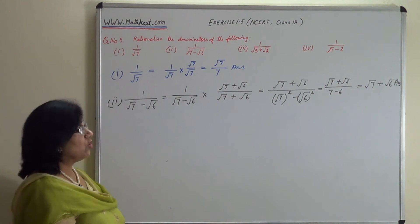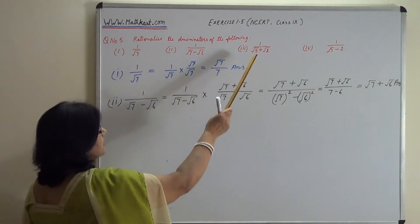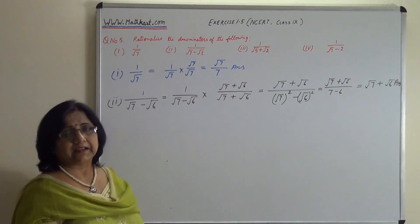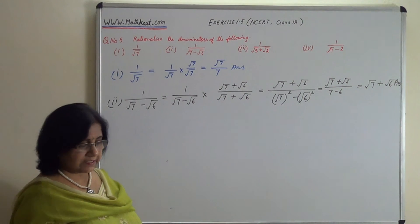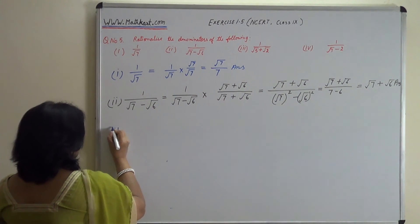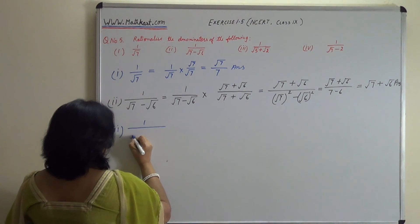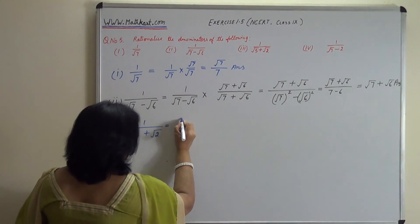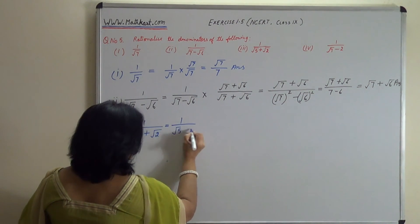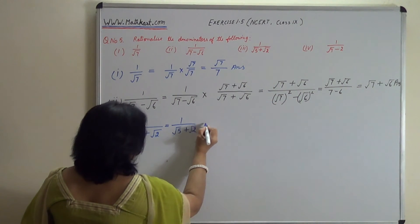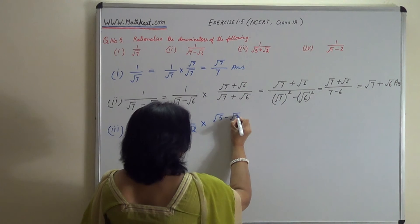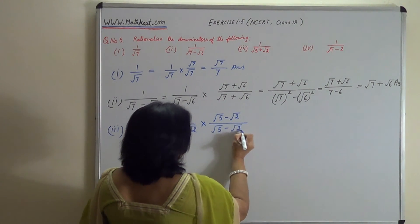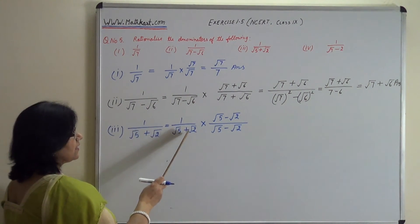यहाँ plus का sign है तो जब multiply करेंगे तो minus का sign आएगा — बस sign change करके multiply करना है। यह याद रखना होगा। Third part में: 1 upon root 5 plus root 2 equals 1 upon root 5 plus root 2 into root 5 minus root 2 upon root 5 minus root 2.